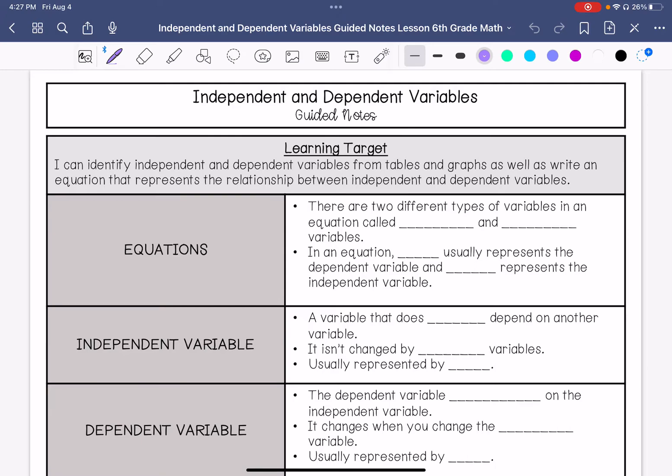In an equation there are two different types of variables called the independent and dependent variables. In an equation, y is usually the variable that represents the dependent variable and x is the letter that represents the independent variable.